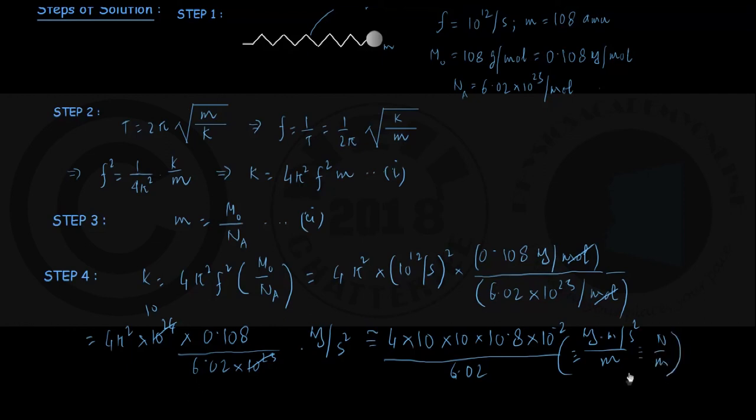The expected unit of force constant of a spring or in this case a bond. Now look at this value here, 10 to the power minus 2 cancelling out with 10 square, we are getting 4 into 10.8 by 6.02 is numerically approximately about 7.1. So you finally get the force constant of the bond is about 7.1 Newton per meter, which is option number 2 in the question, and we have chosen option 2 as the correct option. So that is this question solved.